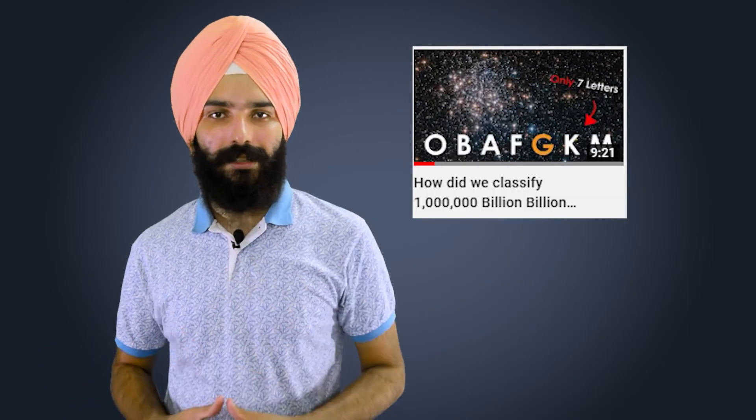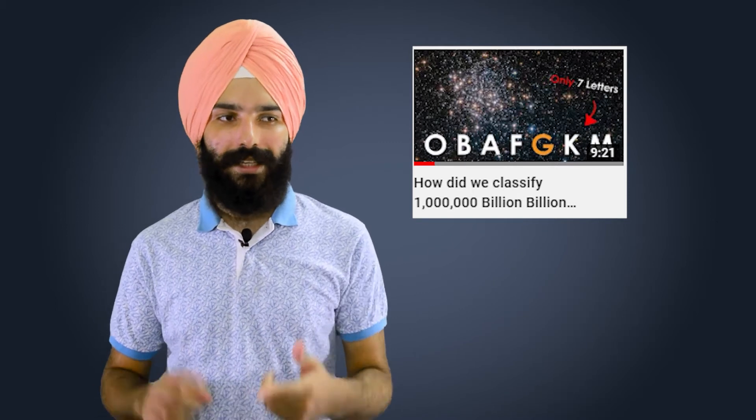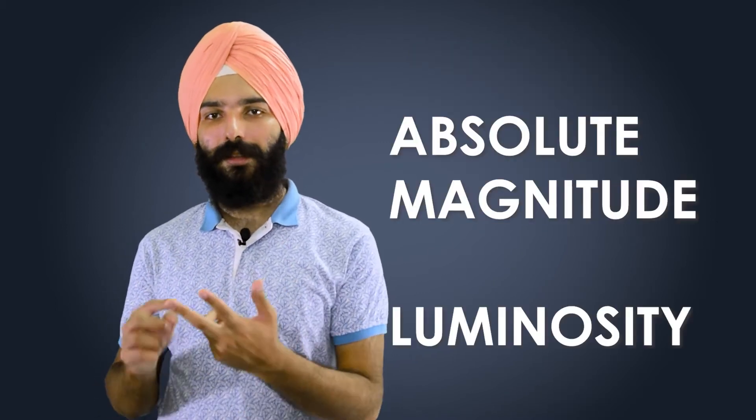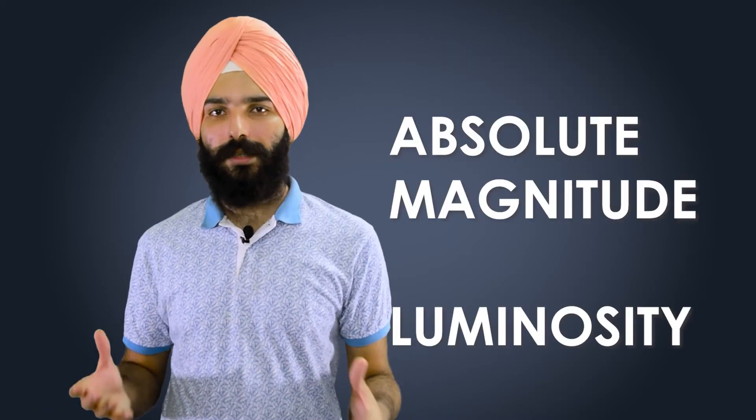Now if you've watched my video on stellar classification, you might understand terms like absolute magnitude and luminosity, which are both directly related to the star's intrinsic brightness. We're going to make use of both of them in this diagram. So let's come to the diagram now.